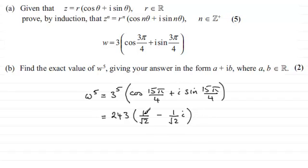If you want, you could rationalize each of these by multiplying top and bottom by root 2. That will give you root 2 over 2 here, so that when you expand this fully you end up with 243 root 2 over 2, and then minus 243 root 2 over 2, and that's i.